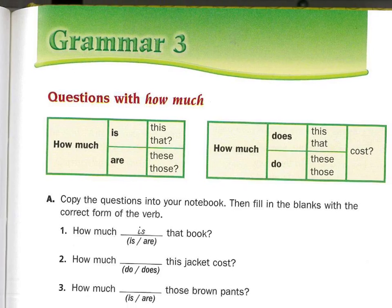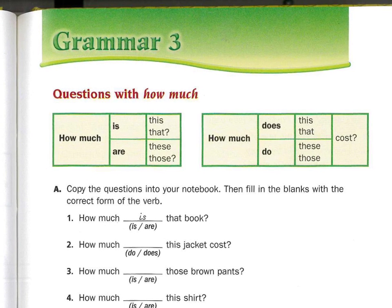Now Grammar 3: Questions with how much. How much is this? How much is that? You say it. How much is this? How much is that? How much are these? How much are those? This is for one thing. These and those are for two or more things.